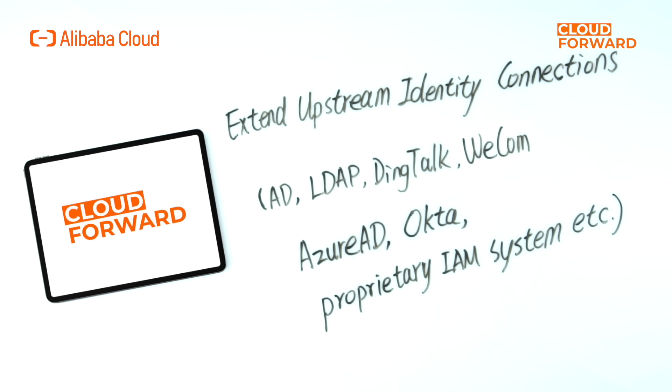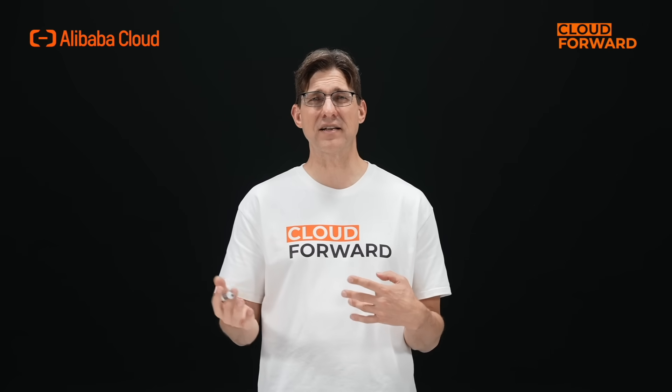IDES can extend upstream identity connections, such as AD, LDAP, DingTalk, WeCom, as well as international identities like Azure AD, Okta, and proprietary IAM systems for user logins, data synchronizations, and unified control. At the same time, through credential verification, status checks, data filtering, and permission control capabilities, the compliance and controllability of upstream identity data can be ensured.